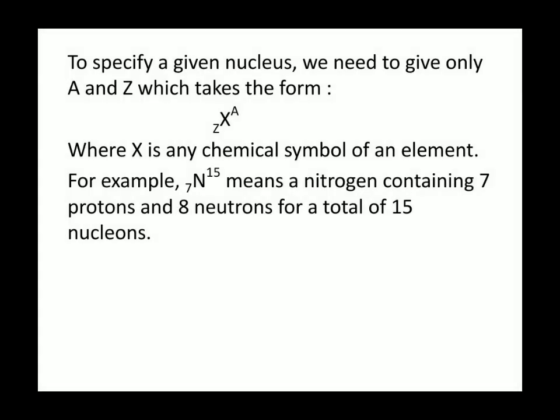Now to specify a given nucleus, we need to give only A and Z which takes the following form. Here, X is any chemical symbol of an element. Now for example, for nitrogen with atomic number 7 and mass number 15, it means that nitrogen contains 7 protons and 8 neutrons for a total of 15 nucleons.